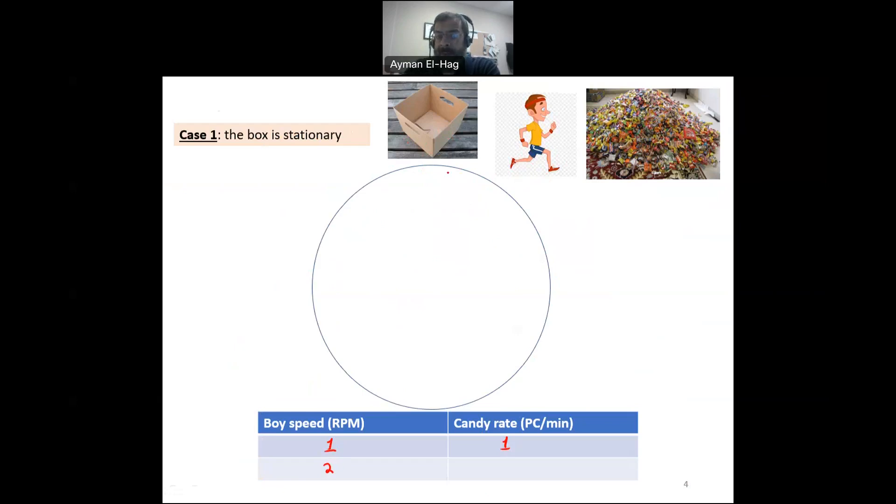Imagine if he went at 2 RPM, he goes there. So he finishes the task twice in a minute. Then, the rate of the candy will be also 2 and so on and so forth. So the faster he goes, the more candy you will have with the same rate. So if the box is stationary, the frequency will be the same or the speed will be the same. So if the rotor is blocked, the frequency in the rotor and the stator will be exactly the same.